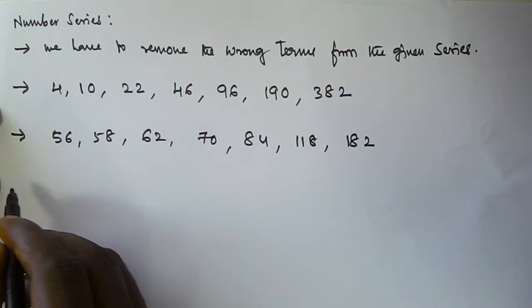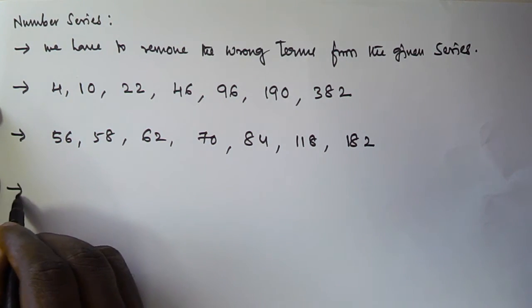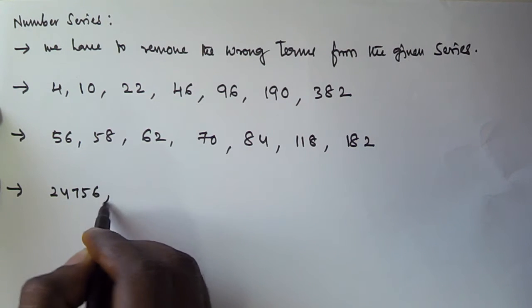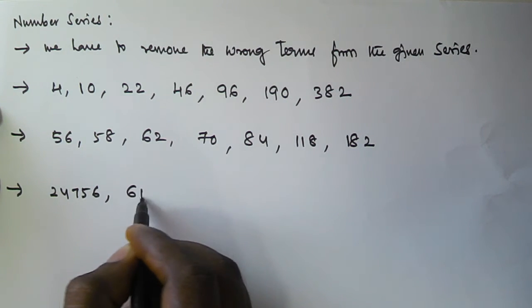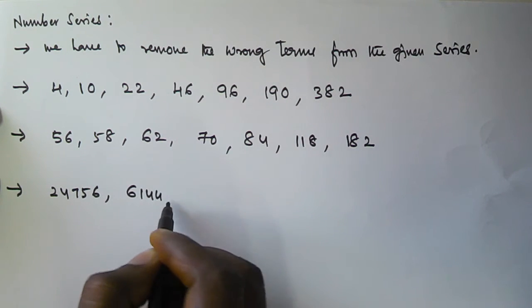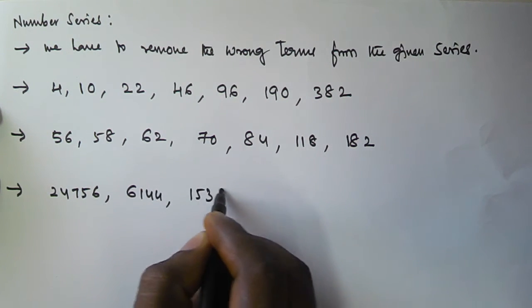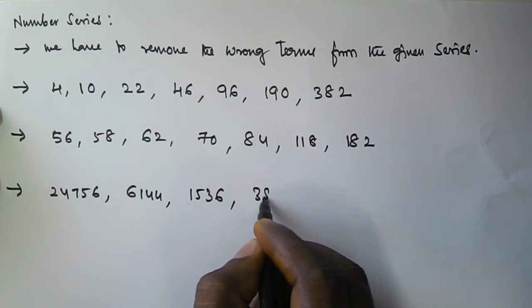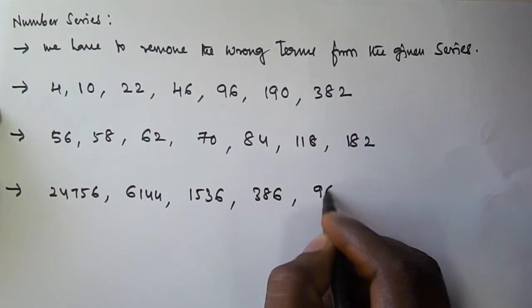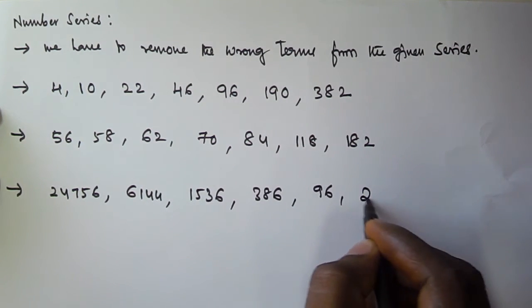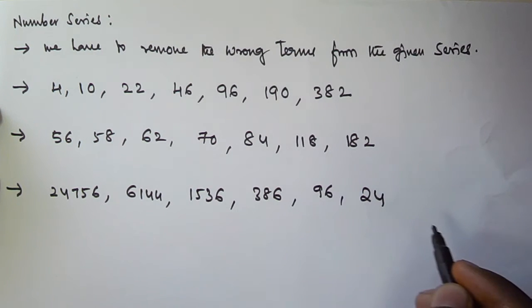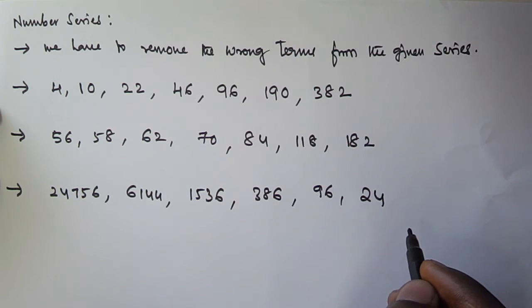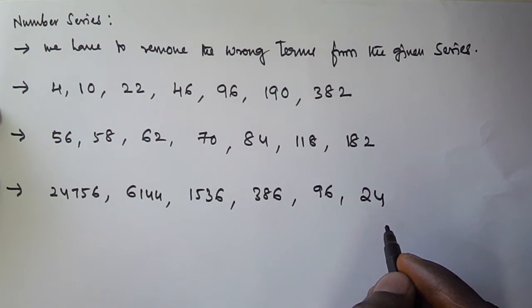The next problem given is 24756, 6144, 1536, 386, 96, and 24. We have to remove the wrong term from each series.